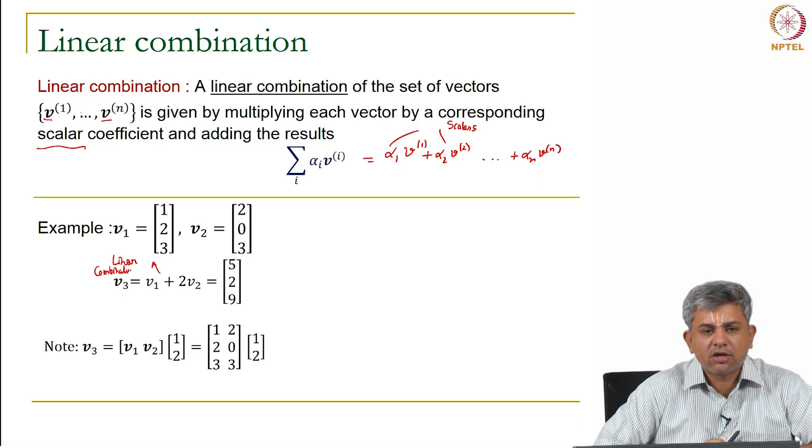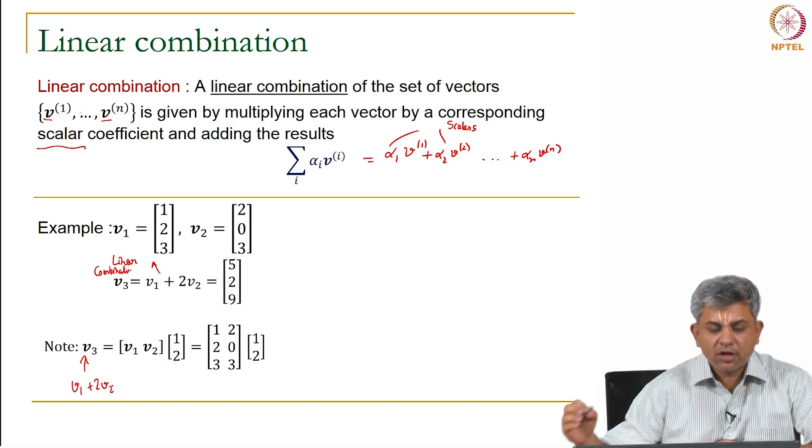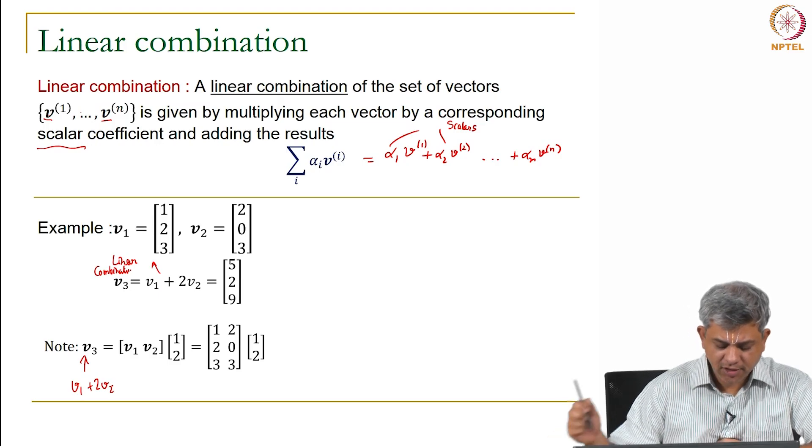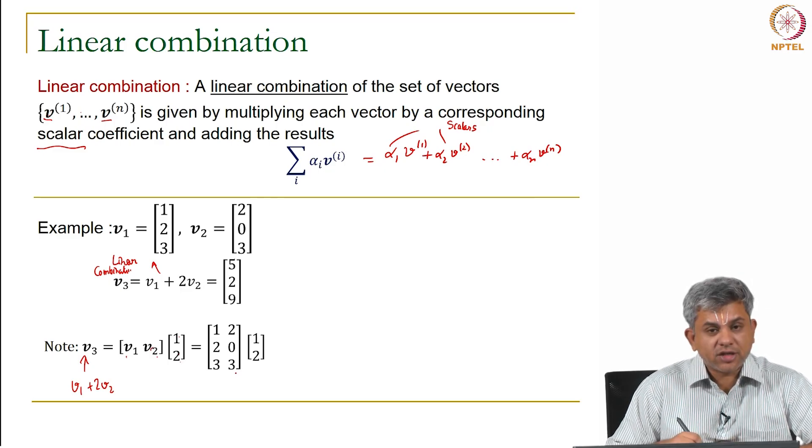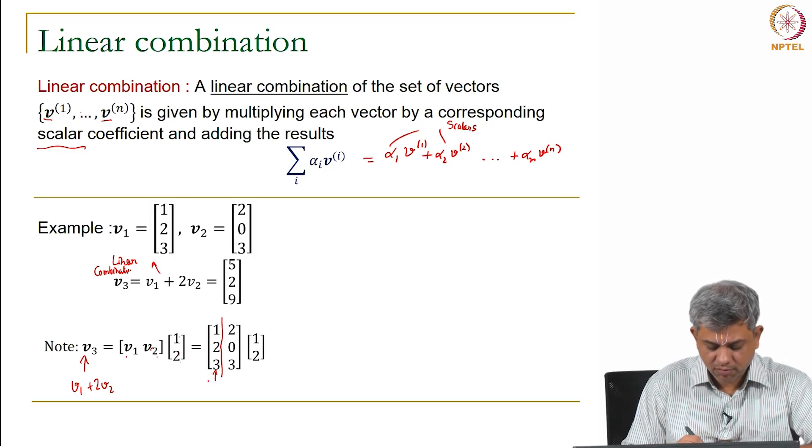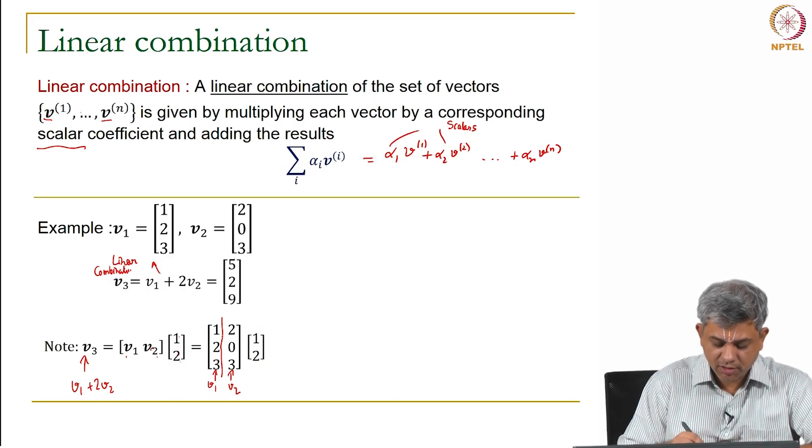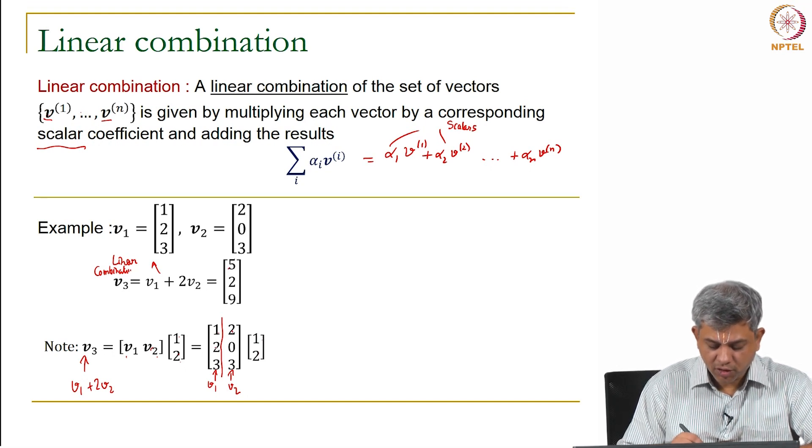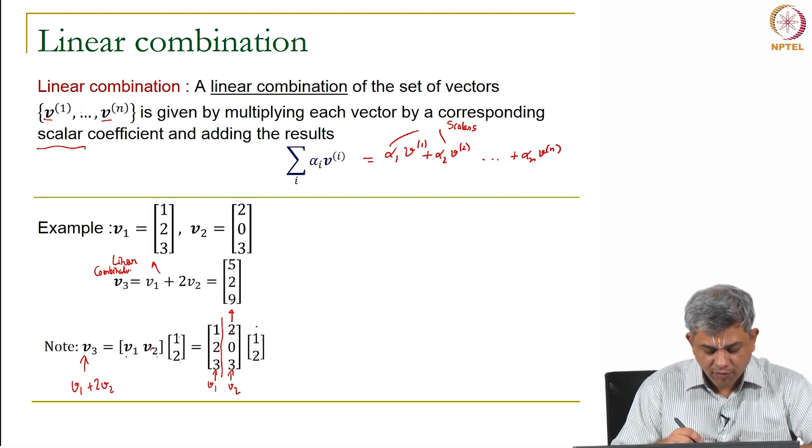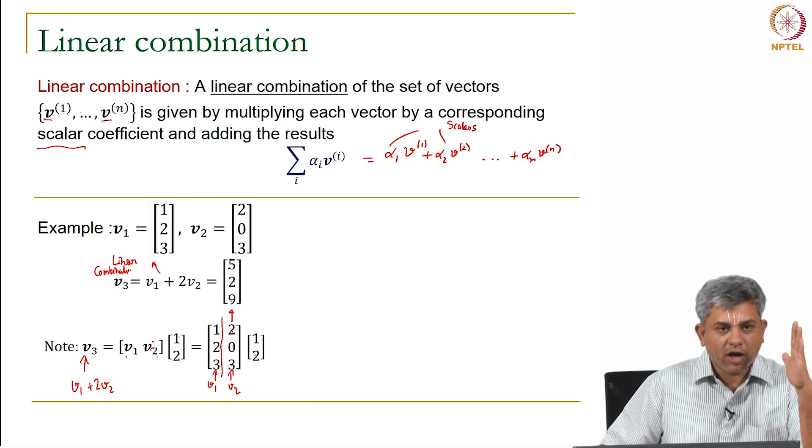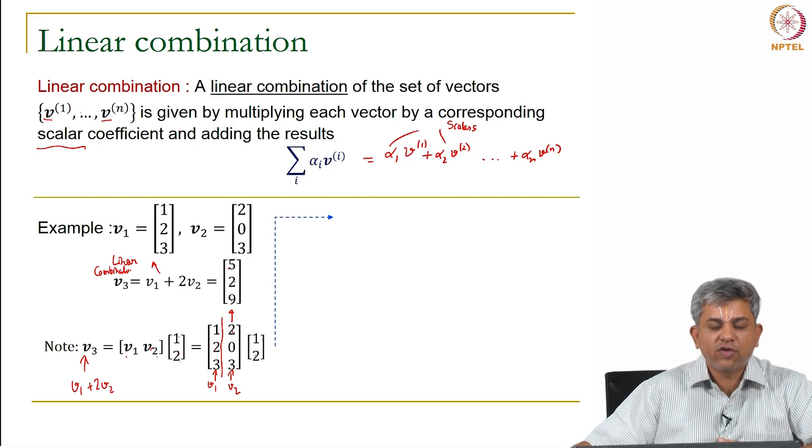An interesting way of thinking about this linear combination V3 = V1 + 2V2 is to write it as a product. We can write it as [V1 V2] multiplying [1, 2], so you get V1 + 2V2. In matrix notation, multiplying this vector by this gives the first element as 1 + 2×2 = 5, then 2 + 0×2 = 2, and 3 + 3×2 = 9. So essentially V1 + 2V2 can be thought of as a linear combination of two columns.